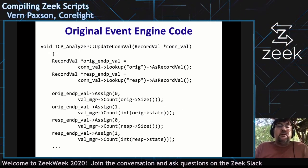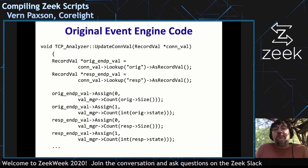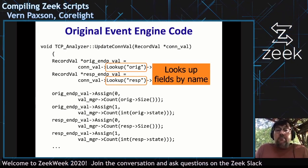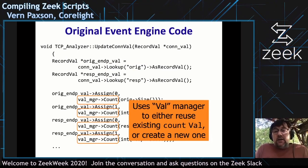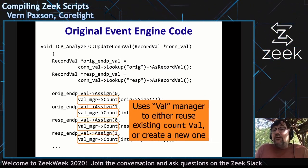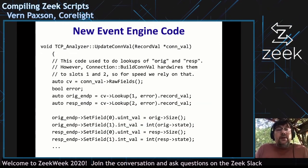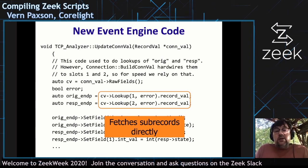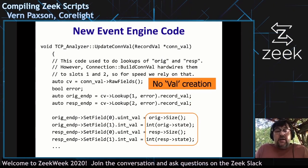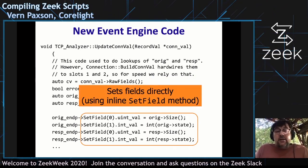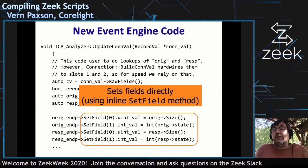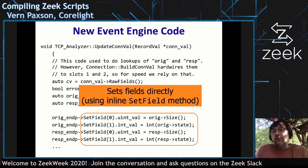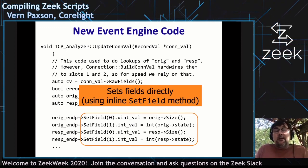Let me illustrate that in the event engine. This is what is executed every time there's a TCP event, for example. This code does a lookup of these fields — updating the connection record by name — and then does all these assignments, which may create new values or reuse existing ones. With the ZAM val unions, this can instead directly fetch the record values without creating any Vals at all. We directly assign using set_field, which returns a reference to the ZAM val union associated with the record offset — much more efficient, no dynamic creation, no lookup by string.